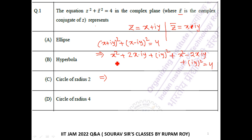Now, x squared plus x squared, that is 2x squared. 2xiy minus 2xiy will be cancelled out like this.